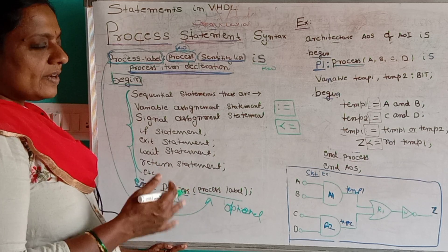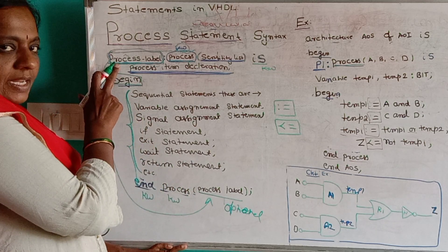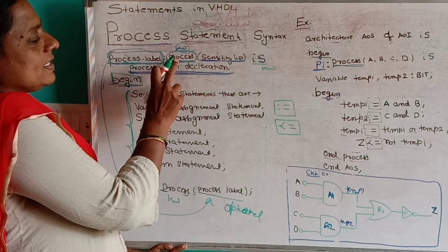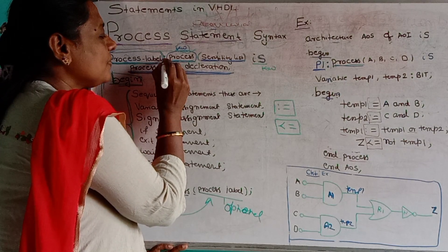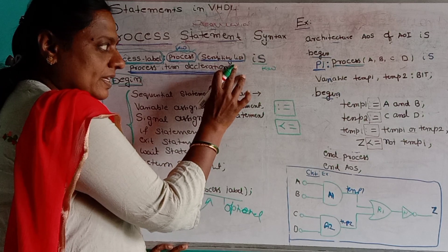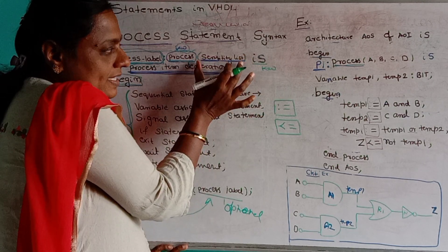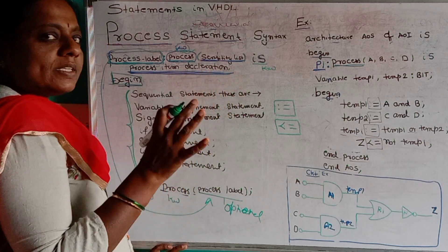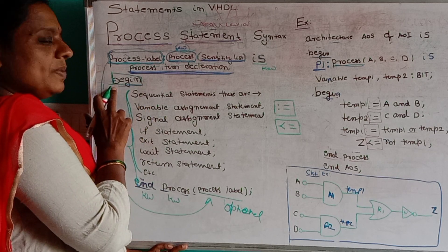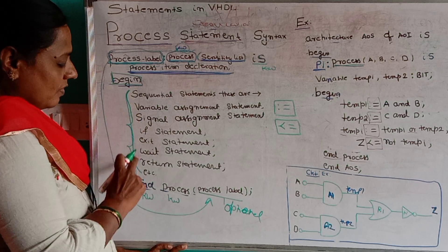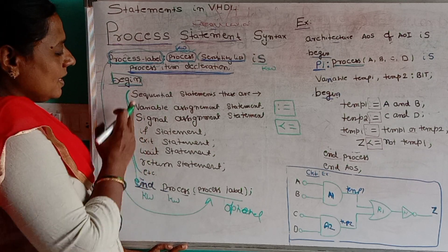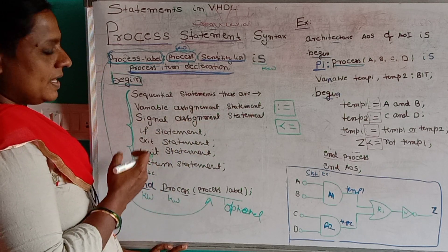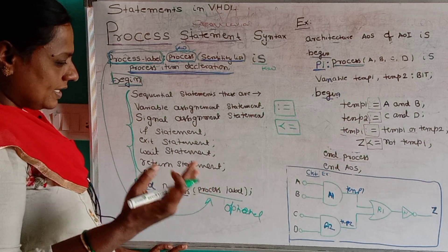Let us revise the syntax once again. It begins with the process label — remember, if it begins with the process label, it should end with the process label. Next, it starts with the keyword 'process', followed by the sensitivity list and 'is'. 'Process' and 'is' are keywords, whereas the sensitivity list is the list of inputs. Afterwards, write the process item declaration, then 'begin', followed by any number of sequential statements — variable assignment, signal assignment, if statement, exit statement, wait statement, return statement, report statement.